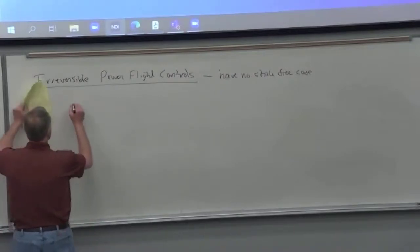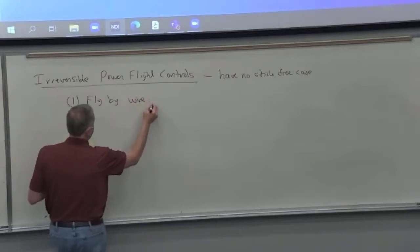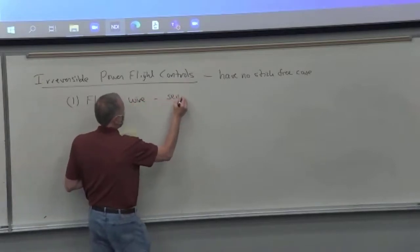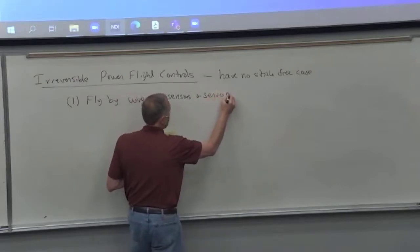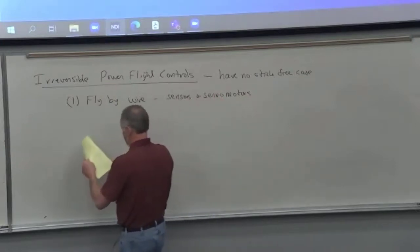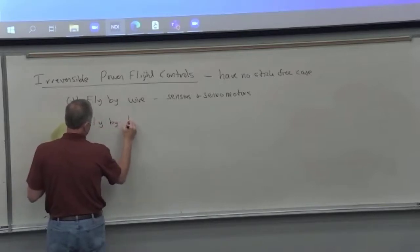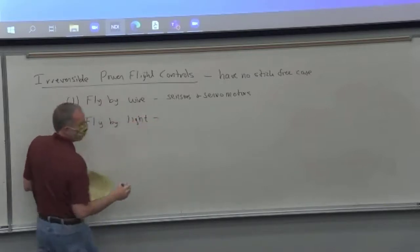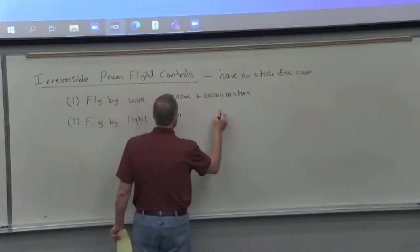So examples of this are the one that I was talking about, fly by wire. Contains sensors and servo motors. There's fly by light, which sounds really awesome but it really just means that optical fibers carry the signal rather than wires. So it still has sensors and servo motors.